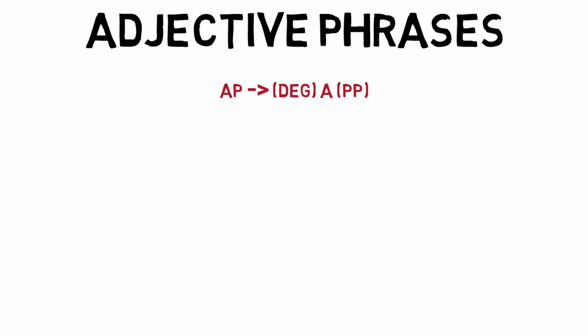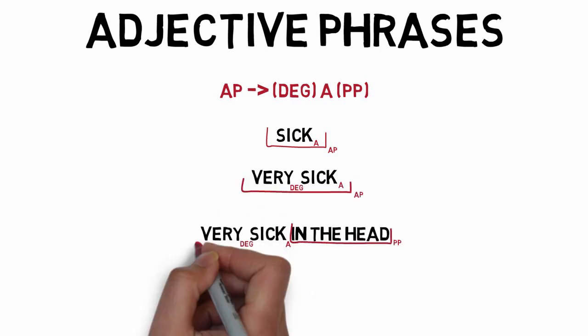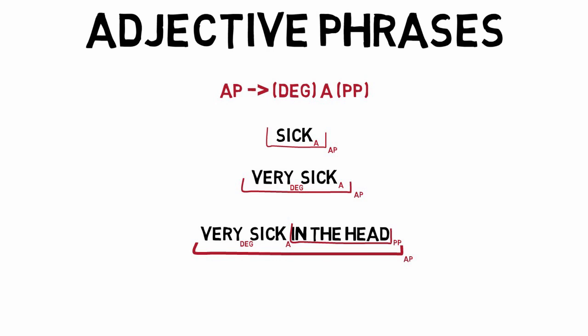This grammar can generate any of the following sentences or phrases: sick, very sick, or even very sick in the head. It does not generate big sick, which is two adjectives, very too sick, which is two degrees/specifiers, or very sick in the head in the stomach, which is two prepositional phrases.